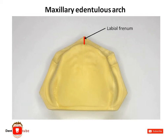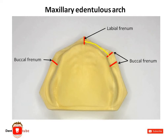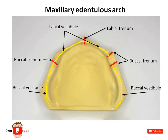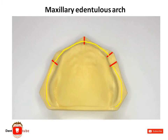A similar kind of structure that extends towards the cheek is known as the buccal frenum. The portion of the oral cavity that is bounded on one side by the alveolar ridge and on the other side by lips and cheeks is known as the vestibule. When it is bounded by the lip it is called the labial vestibule, and if it is bounded by the cheek it is called the buccal vestibule. So the buccal frenum separates the vestibule into the labial and the buccal vestibule.